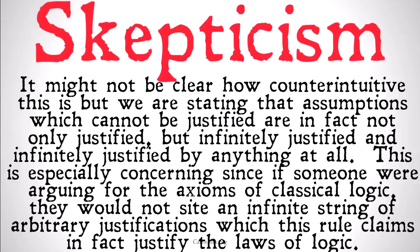This is especially concerning because if someone were arguing for the axioms of classical logic as opposed to non-classical logic, they would not cite an infinite string of arbitrary justifications as their justification — which is what this rule claims are the justification of the laws of logic. Someone defending classical logic wouldn't say all of our axioms are infinitely justified because they're justified by this and justified by that. This kind of justification of axioms is completely divorced from any possible idea of justification in theories of justification. There's no reason you would use an arbitrary infinite string of propositions to claim the laws of classical logic are true. You would provide some other argument — perhaps why non-classical logic doesn't map onto reality and classical logic maps onto reality better — not just claim it's justified by a bunch of arbitrary reasons that go on forever.